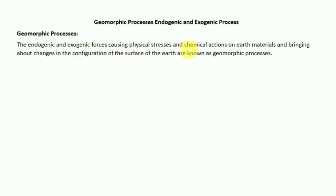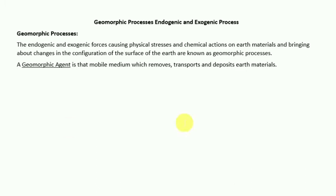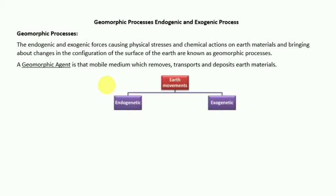Geomorphic processes involve both endogenic and exogenic forces causing physical stress and chemical action on earth materials, bringing about change in the configuration of the surface of the earth. A geomorphic agent is a mobile medium which removes, transports, and deposits earth's material. It is broadly divided into two parts: endogenetic and exogenetic.